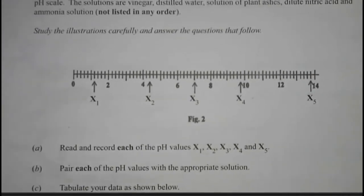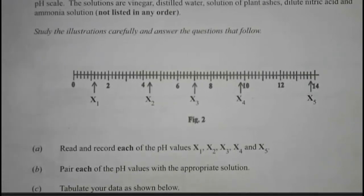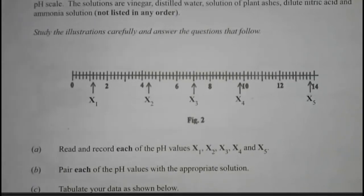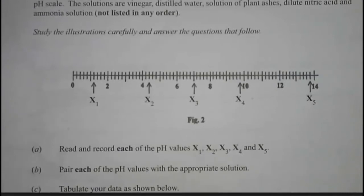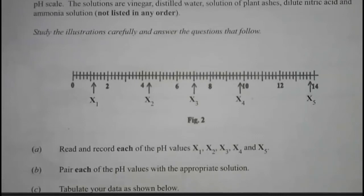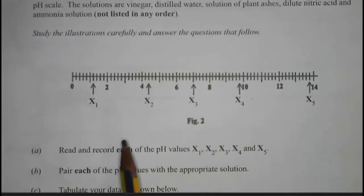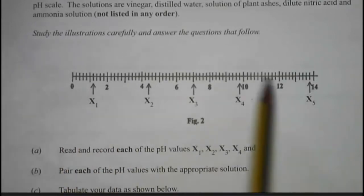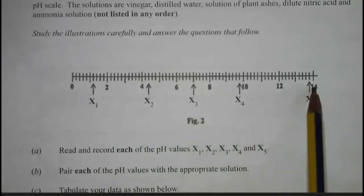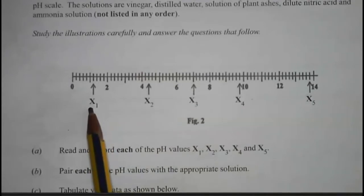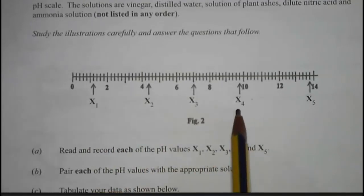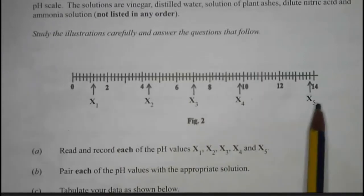Now let's look at this past question on pH. The figure below is an illustration of the pH values x1, x2, x3, x4, and x5 of five different solutions on a pH scale. The solutions are vinegar, distilled water, solution of plant ashes, dilute nitric acid, and ammonia solution, but these are not listed in any particular order. Figure two shows the pH scale from 0 to 14 and the various positions of each solution.